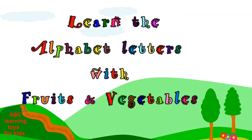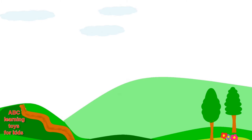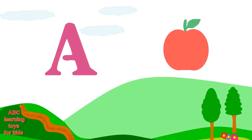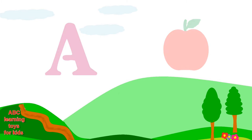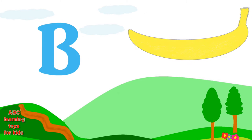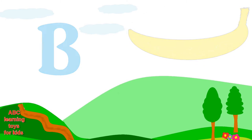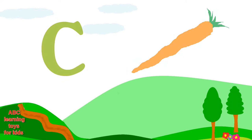Let's learn the alphabet letters with fruits and vegetables. A is for apple. Apple. B is for banana. Banana. C is for carrot. Carrot.